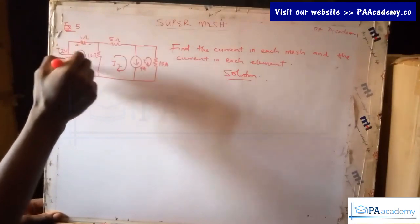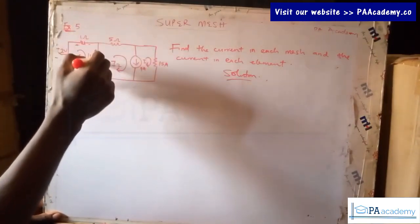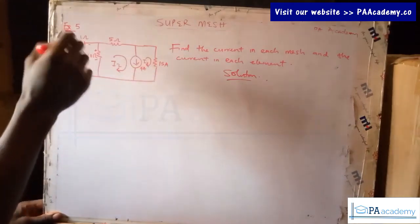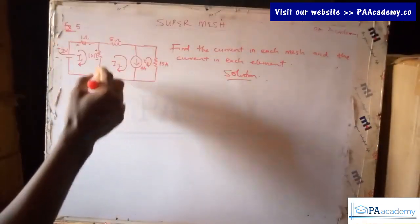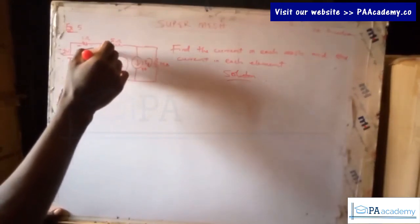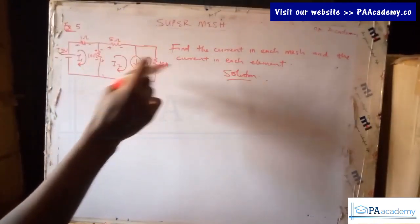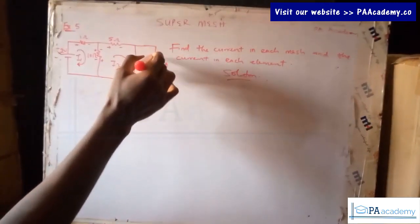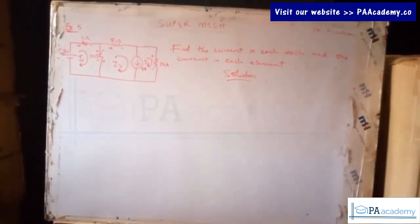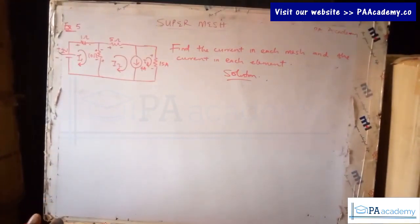For the resistors, polarity depends on current direction. Going in this direction, the terminal we enter first is plus, then minus. We assign plus-minus, plus-minus accordingly for each resistor. With all polarities assigned, let's now write the equation for the current source.